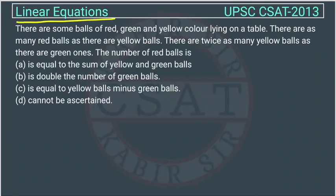This is a linear equation type of question asked by UPSC in their CSET paper of 2013. There are some balls of red, green and yellow color lying on a table. There are as many red balls as there are yellow balls, so red ball is equal to yellow ball.